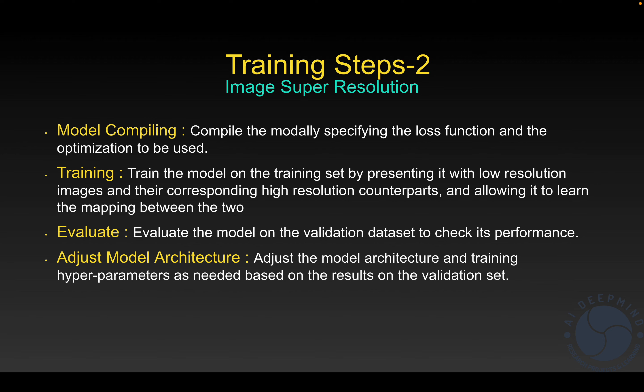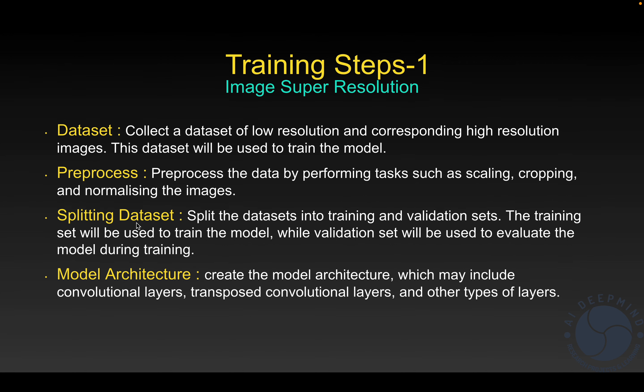After training, we tune hyperparameters — changing the loss function, learning rate, or optimizer. We can also tune the model architecture by adding more layers. Then we recompile and retrain, repeating this cycle to improve performance.